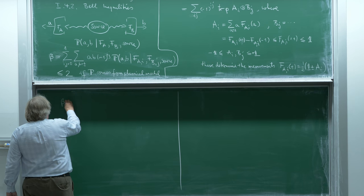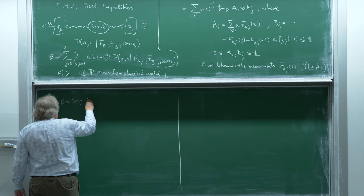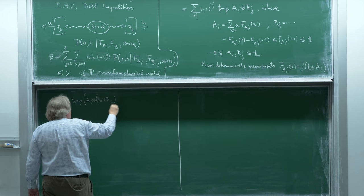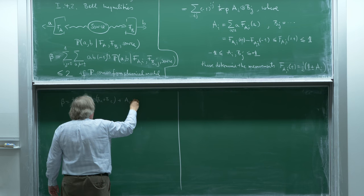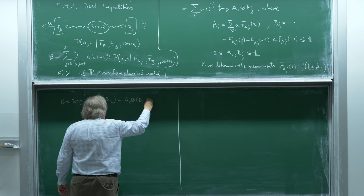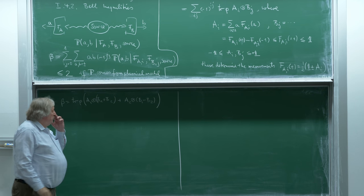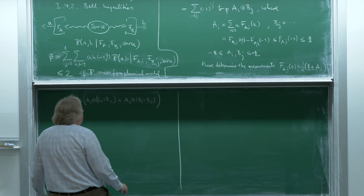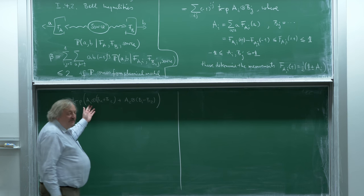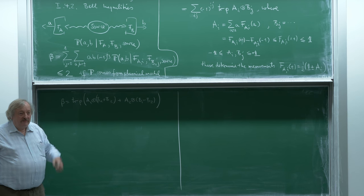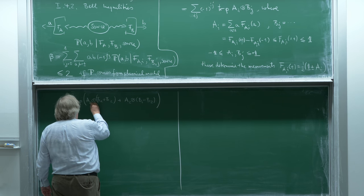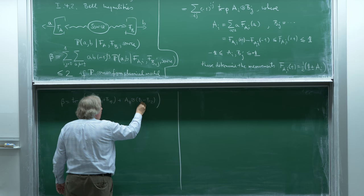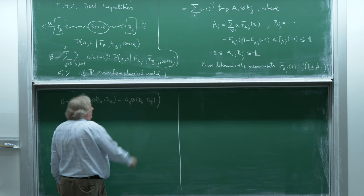So beta now is trace of rho times A_1 tensor (B_1 plus B_2) plus A_2 tensor (B_1 minus B_2). This is just this expression — the sum over the i's and j's. I should call them 0 and 1. I must have written this expression a million times in my life.